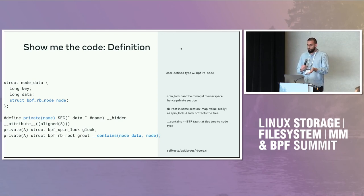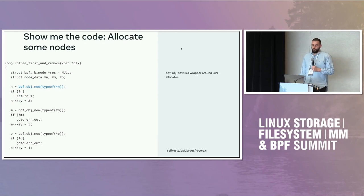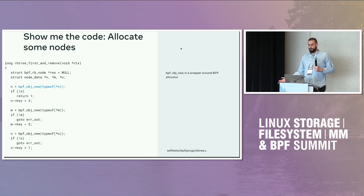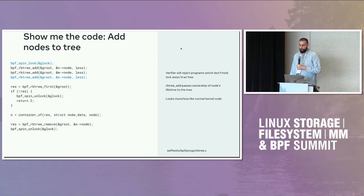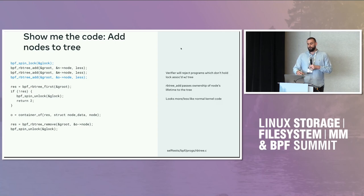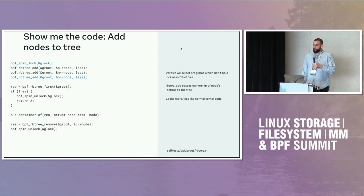Now that we've defined our type, let's allocate some nodes. We use BPF obj new, which is basically a wrapper around the BPF allocator that gives you back an object of a specific type — in this case, a user-defined type of node_data. When adding nodes to the tree, it's important to grab the correct spin lock, otherwise the verifier will reject your program. When you call BPF rbtree add, ownership of the node's lifetime is passed to the tree. So even though we allocated it in our program, while the node is in the tree, it's the tree's job to deallocate it if the tree goes away. As you can see, this looks more or less like normal kernel code, much more so than if we were doing this with map helpers.